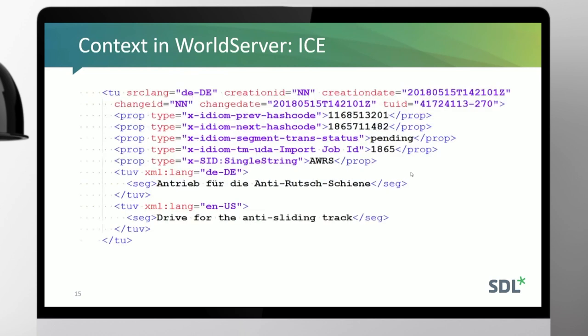Here's an example of how they're represented — this is a TMX export. You can see the text, but we don't store the text of the previous or next segment. We've computed a hash value — not very friendly for a human to read, but much better in the back end to deal with those integer values. It shows that we can store everything that's a neighbor of the segment along with the segment itself.